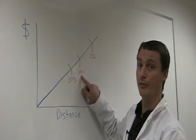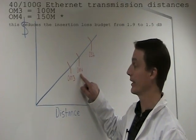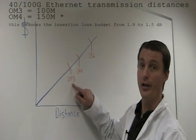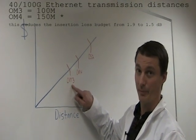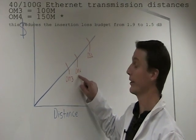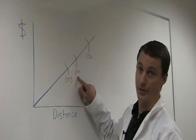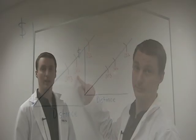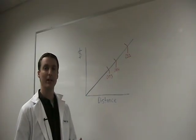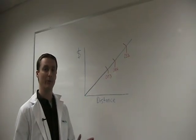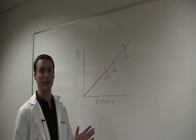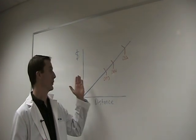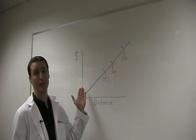When we go to 40 gig and 100 gig, OM3 will be able to go 100 meters, but OM4 will be able to go 150 meters. Ninety percent of all data centers have their runs under 100 meters, so it really just comes down to a costing issue right there.